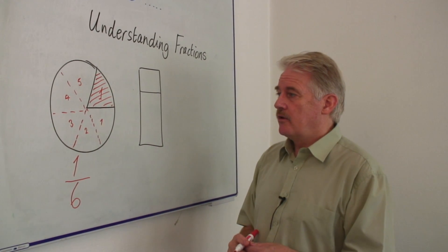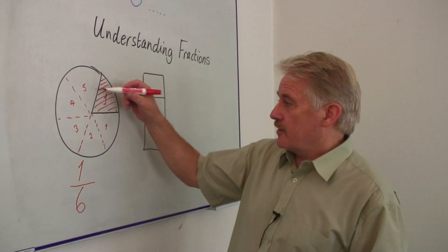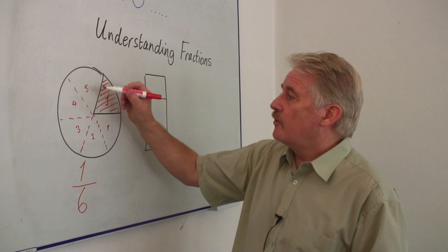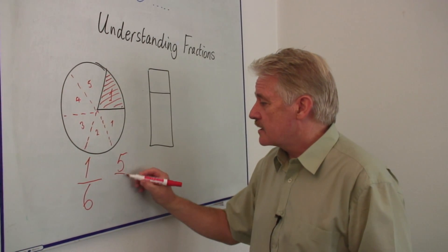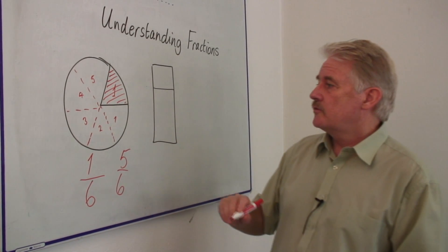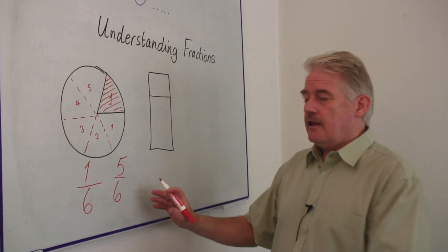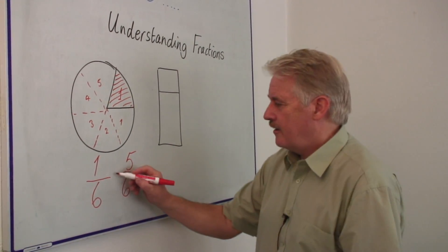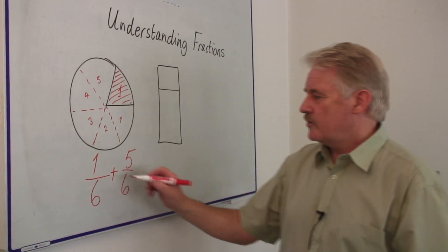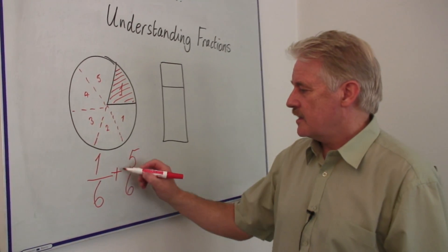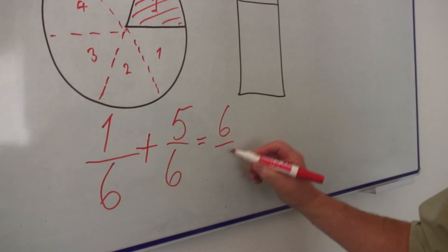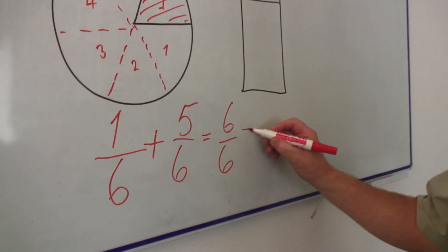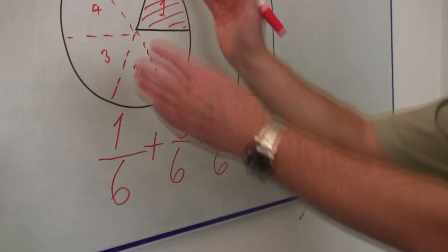That's fairly simple. So this fraction, that is one, two, three, four, five, would be five sixths. Right? And obviously, if we put them together, we know that one sixth plus five sixths will give us six sixths, which is just one, the whole thing.